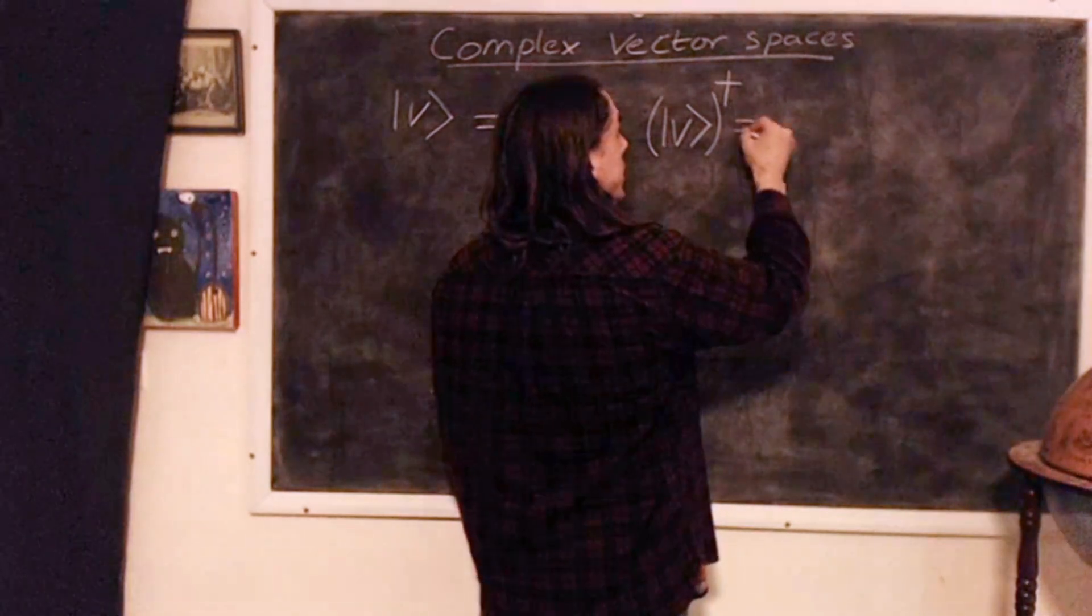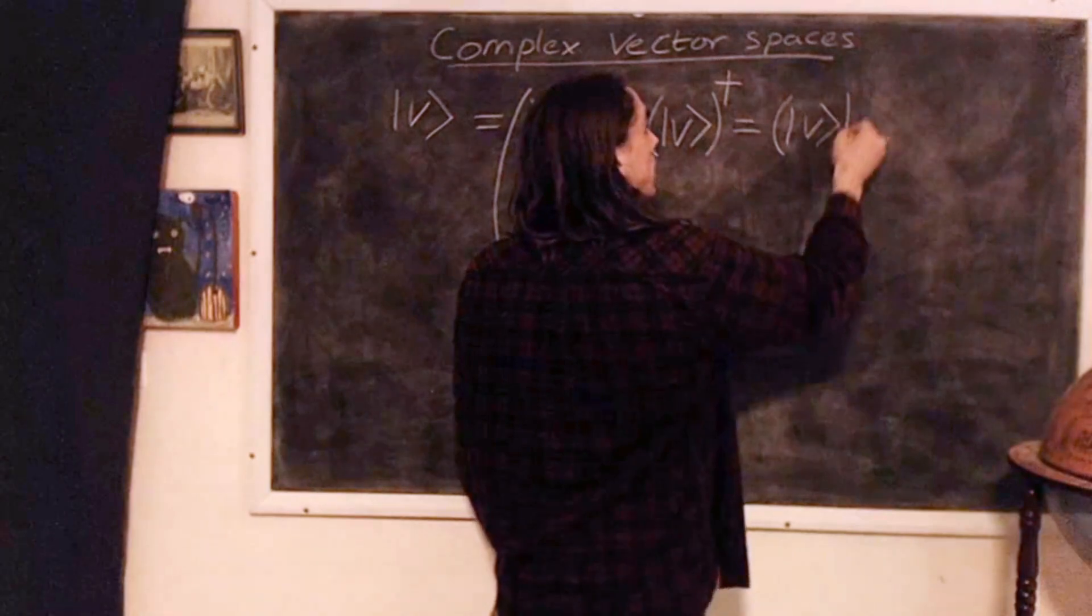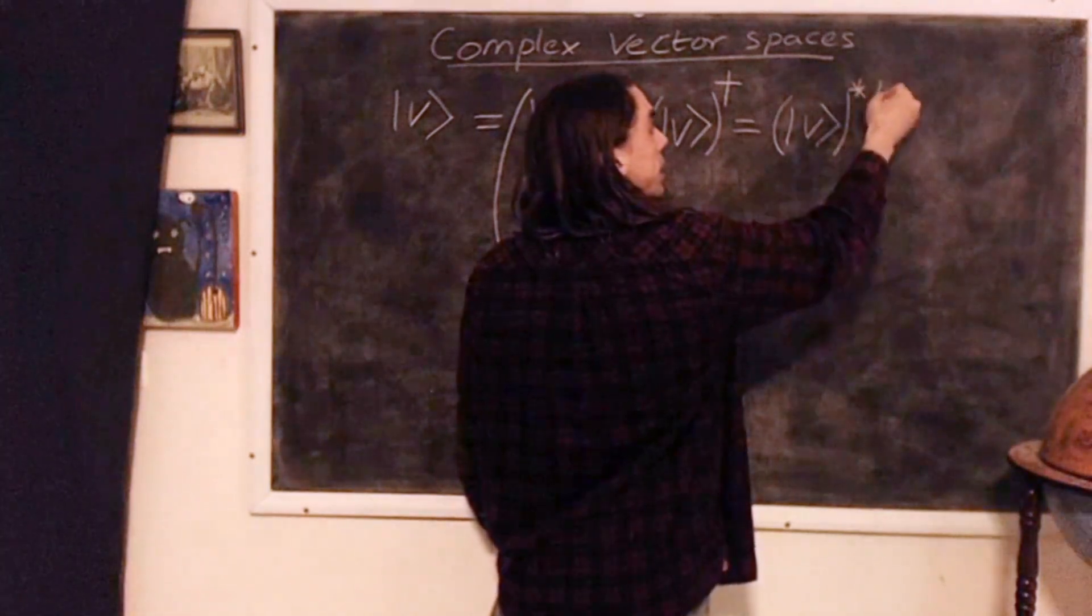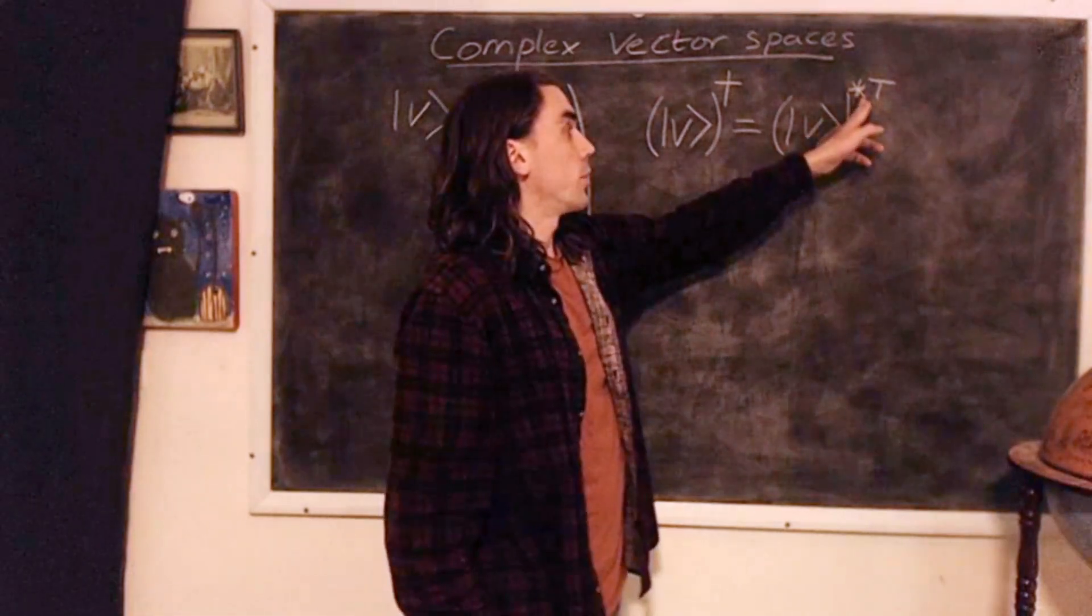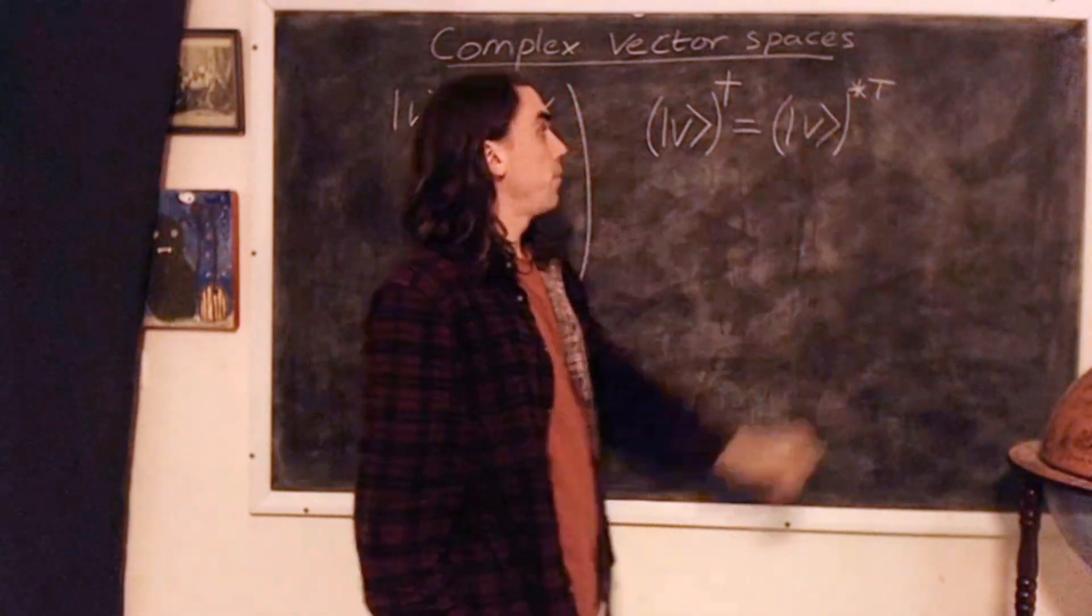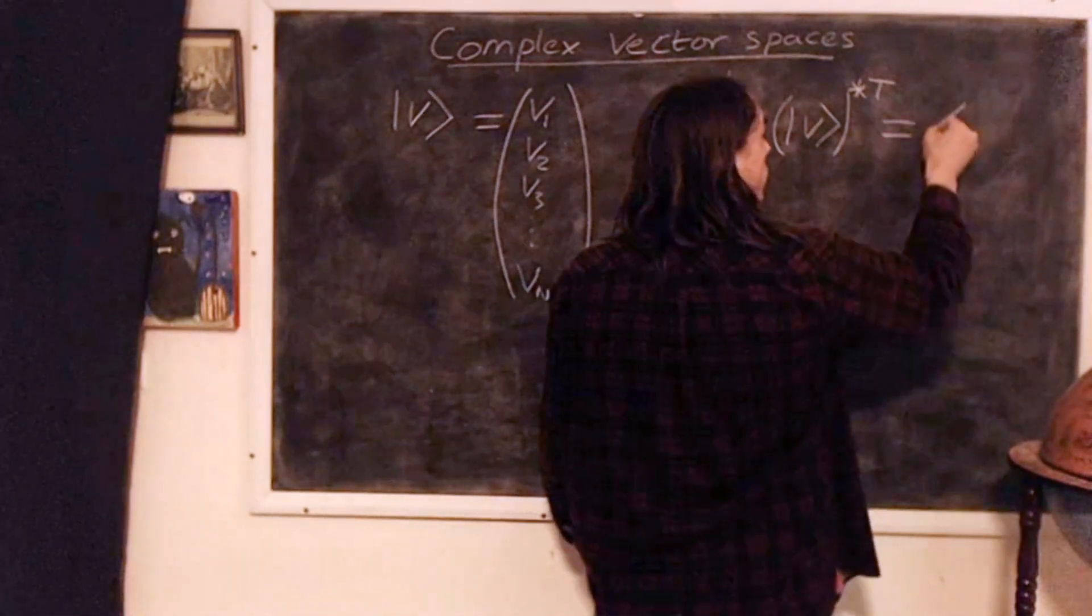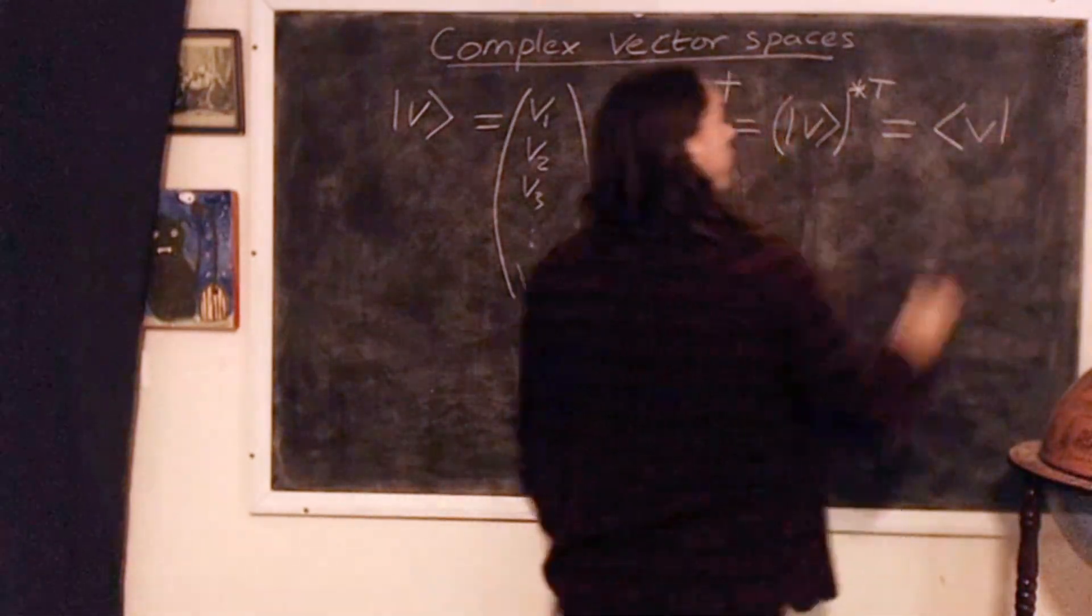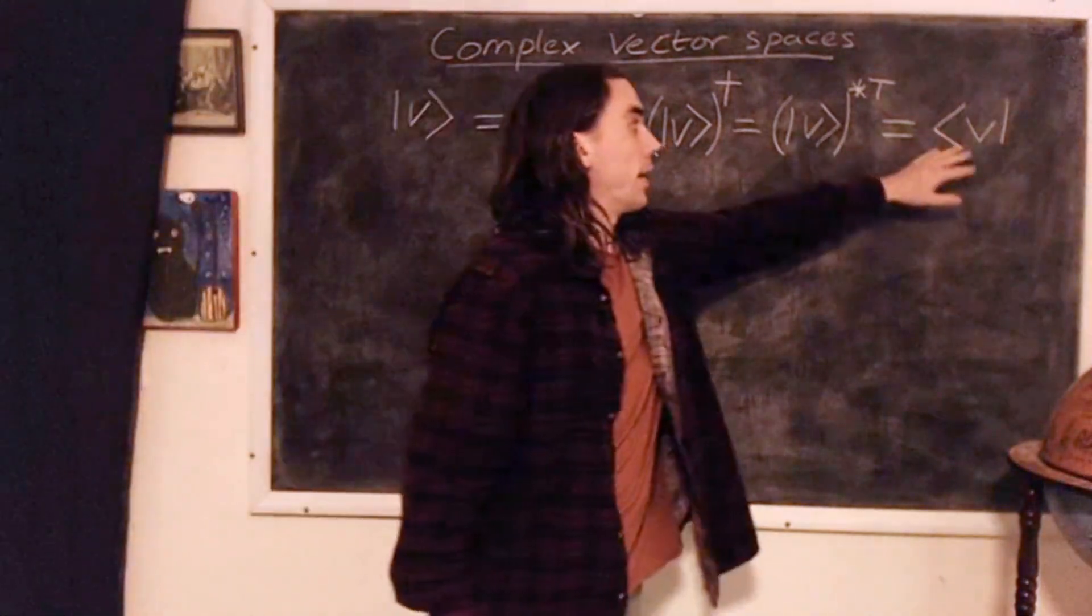And by definition, this is the complex conjugate transposed. And we'll see in the problems that whether you take the complex conjugate first or the transpose first doesn't matter. And we denote this with a backwards angle bracket like this.